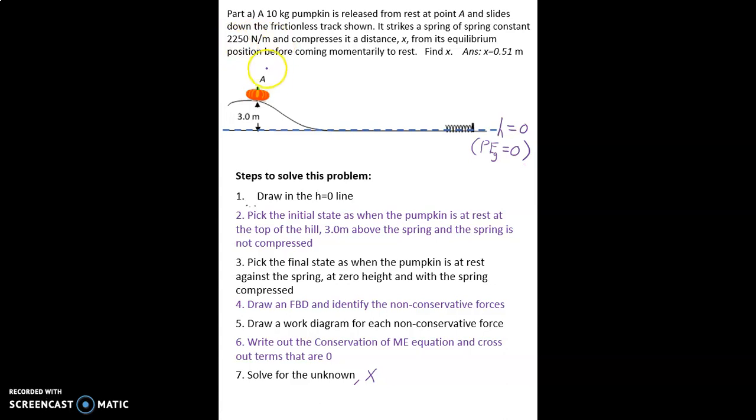All right and we can go ahead and label our states up here. This is initial. You don't have to call it state A anymore. So hi equals three meters, vi equals zero and delta xi equals zero.